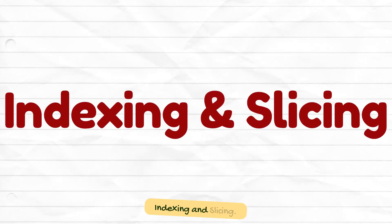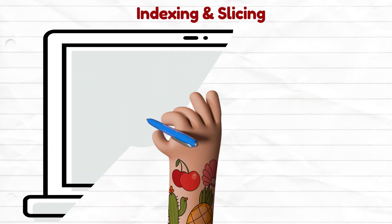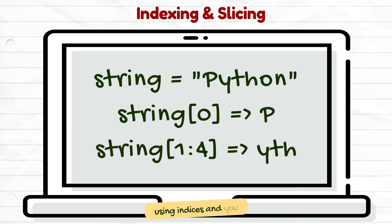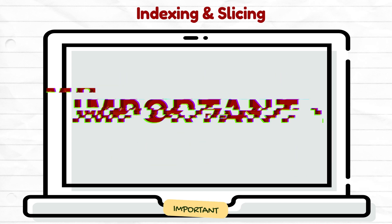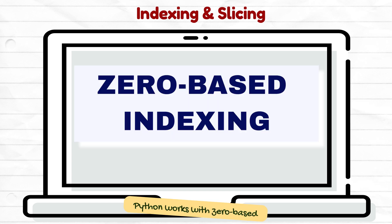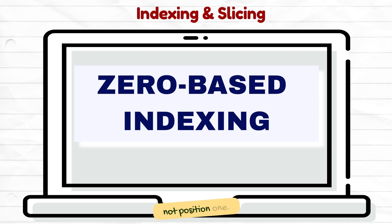Indexing and slicing: strings can be accessed using indices, and you can extract substrings using slicing. Important — Python works with zero-based indexing, meaning that the first item is in position zero, not position one.